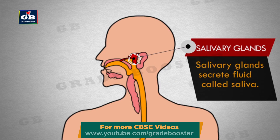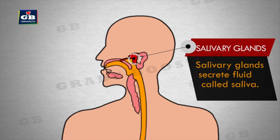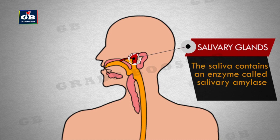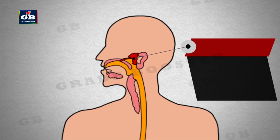Salivary glands. When we eat something, salivary glands secrete a fluid called saliva. It makes the food soft and also digests the food partially with the help of some enzymes. The saliva contains an enzyme called salivary amylase that breaks down starch, which is a complex molecule, to give sugar.